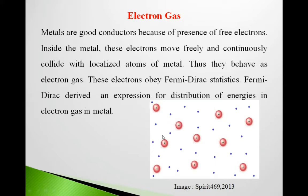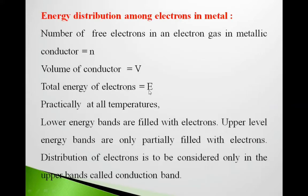These electrons obey Fermi-Dirac statistics. They are fermions. Fermi-Dirac derived an expression for distribution of energies in electron gas in metal. We will see this energy distribution of electrons in metal.